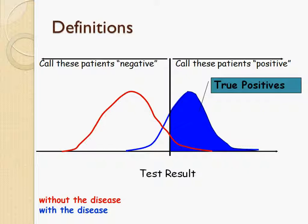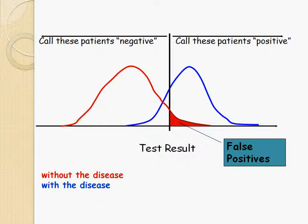Before we introduce the way to find the optimal threshold, let's look at some new terms used to represent the ROC curve. The first is the blue area: this area is classified as positive and in reality it is indeed positive — they are correctly classified, so we name this region true positive. The second region is the small red area that belongs to the negative curve but is classified as positive — this is incorrect, and we name it false positive.